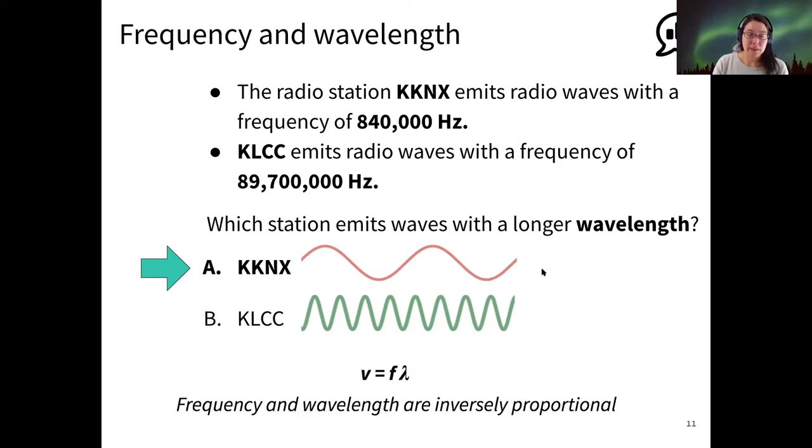We can think about this in terms of our equation, V equals F lambda, because if the speed of light is constant, then the right-hand side of our equation, F times lambda, has to be the same for both radio stations. That means if KKNX has a low frequency, it has to have a large long wavelength. And if KLCC has a high frequency wave, then it has to have a short wavelength.